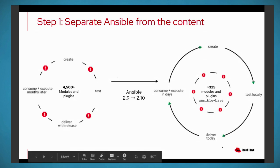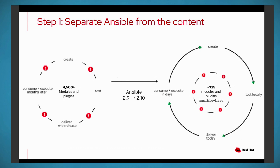So what do we have to do? We worked within the community on this. Step one — let's separate Ansible itself, the execution environment, from the actual content. Because when you download and install Ansible 2.9, you get a lot of stuff: Ansible, modules, plugins, all kinds of goodies — it's almost close to 5,000 modules and plugins. The problem is there are a lot of gates into getting things into Ansible. So moving into 2.10, we are splitting things out. We have something called Ansible base.